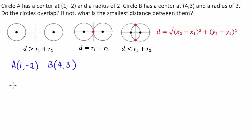So the distance is going to be equal to the square root of (4 minus 1) all squared plus (3 minus negative 2) all squared.